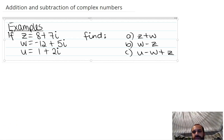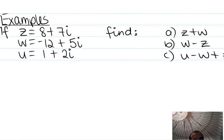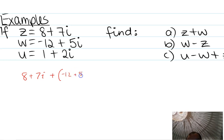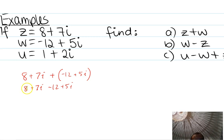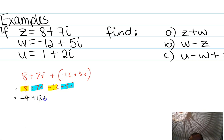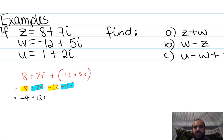So jumping into z plus w: 8 plus 7i plus negative 12 plus 5i, which is 8 plus 7i minus 12 plus 5i. Grouping the real components and imaginary components: 8 minus 12 is negative 4, and 7i plus 5i is 12i. Pretty predictable.